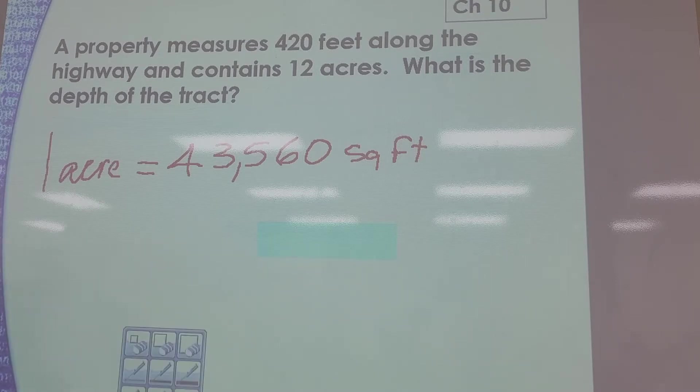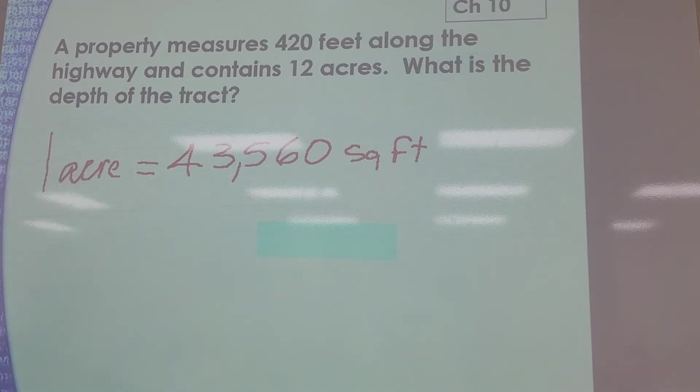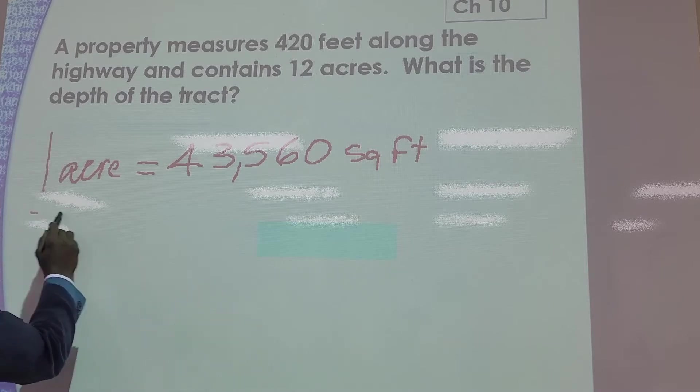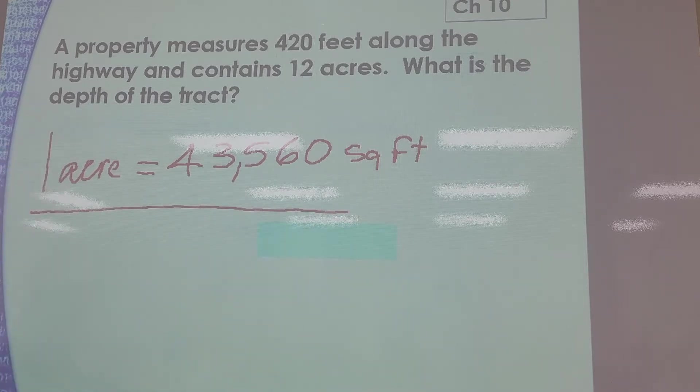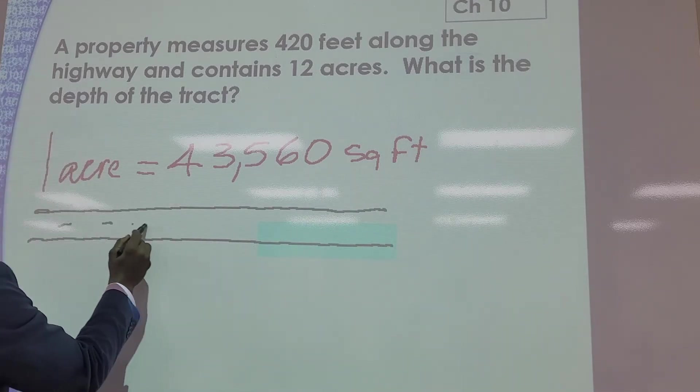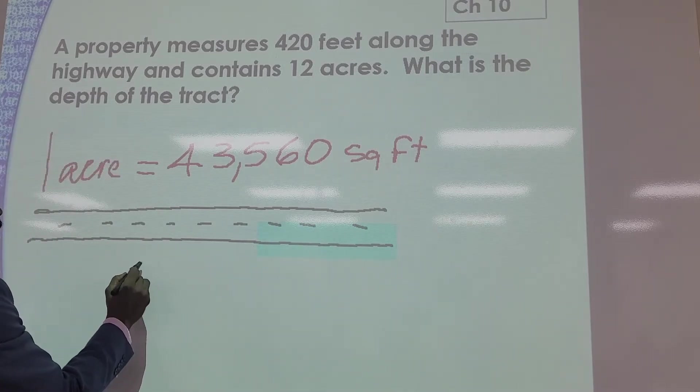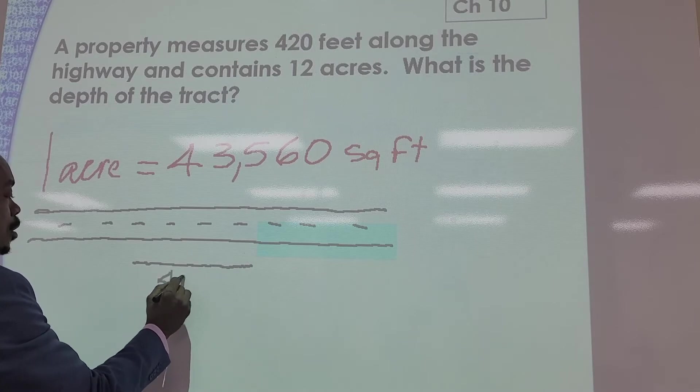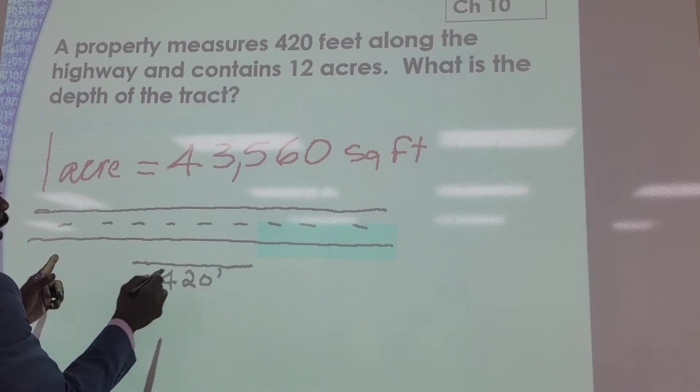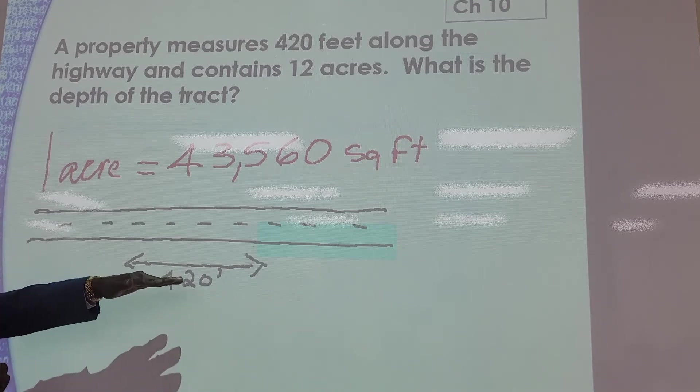So what are they asking you here? In essence, imagine you have a road that travels this way. Along the highway, they're telling you you have a piece of property. This property is 420 feet along the highway.